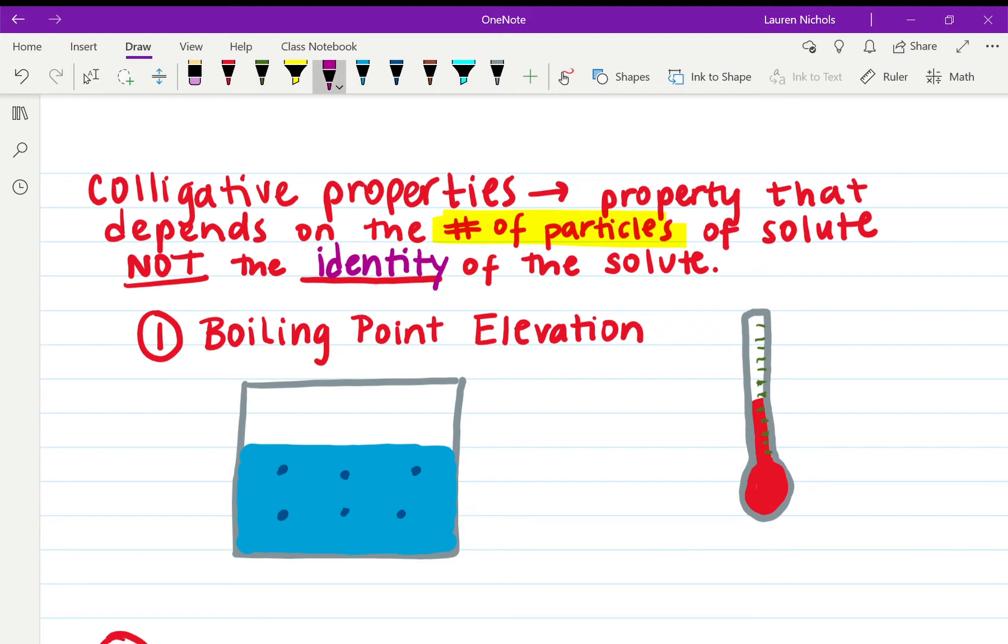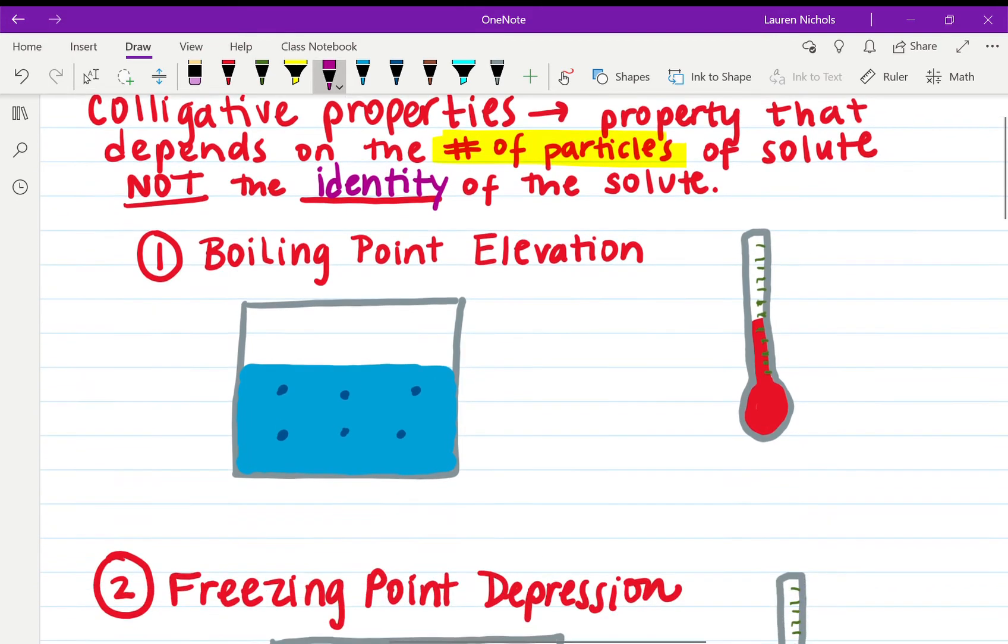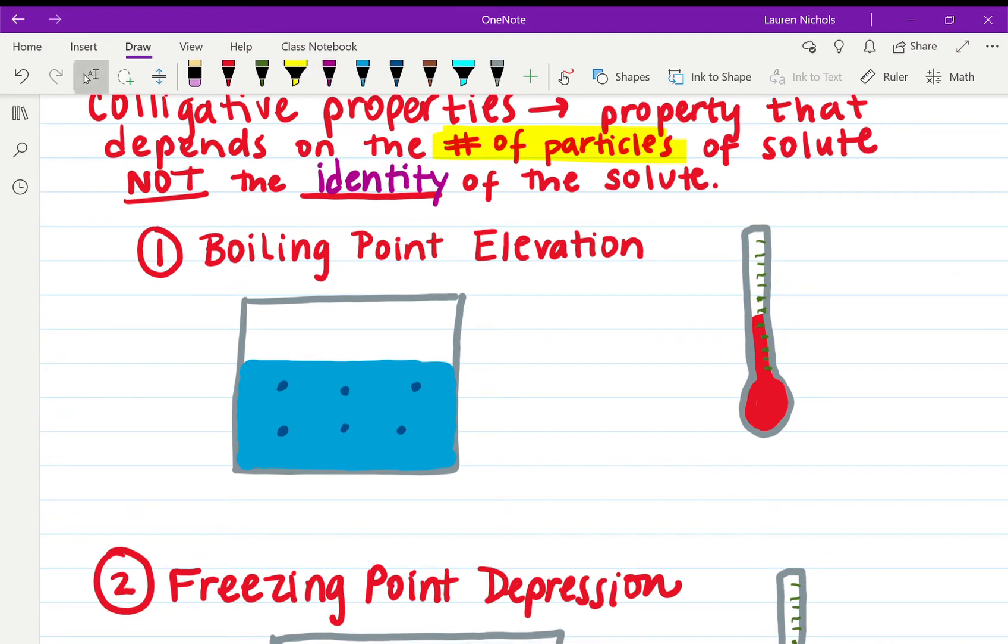There are three colligative properties, but we're only going to be learning about two of them. The first one is boiling point elevation. This means that when you add your solute, you increase the boiling point.